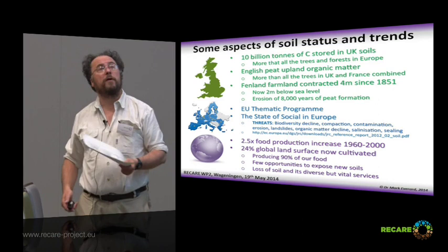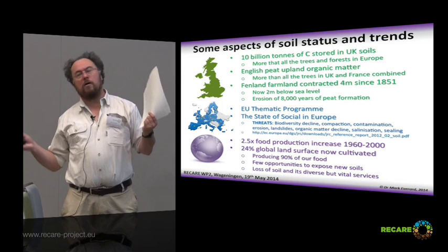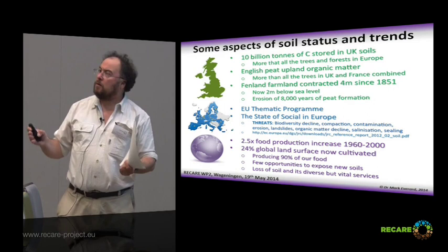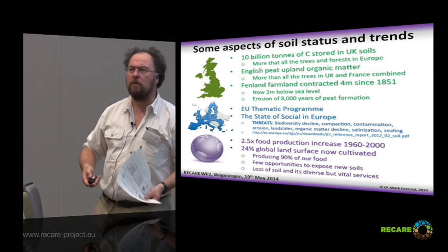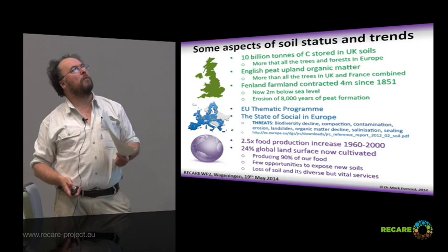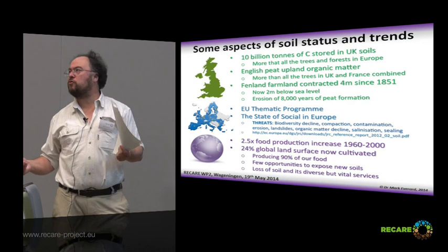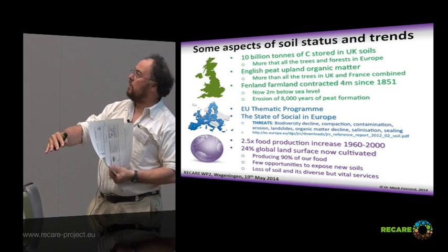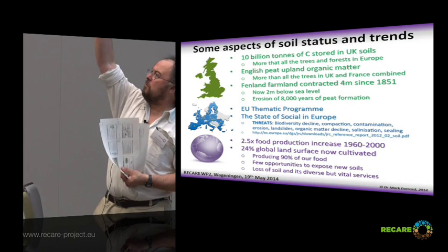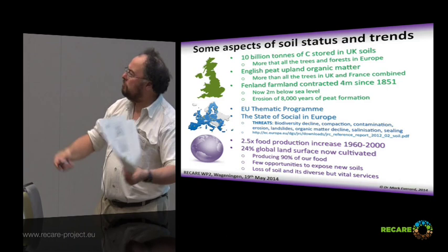Some aspects of status and trends of soil — you know this better than me, but: 10 billion tons of carbon stored in UK soils, more than all the trees and forests in Europe. English peat uplands organic matter has more carbon in it than all the trees in England and France combined. That's big. And yet at the same time, in the east of England, some of our soils have receded by four metres. Two centuries ago, they were two metres above sea level. Now they're two metres below sea level. And that's the land we want to produce our food.